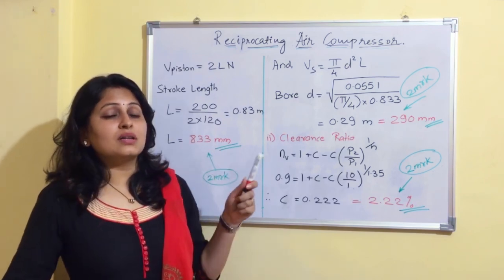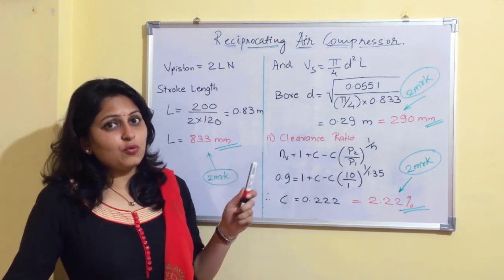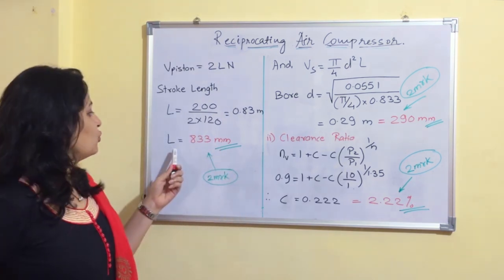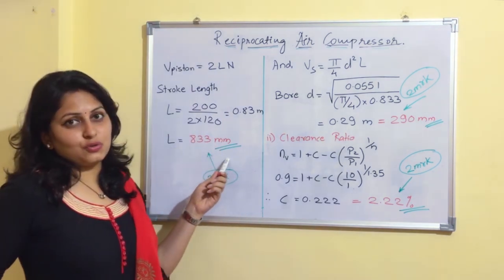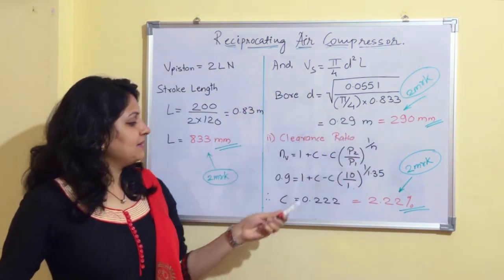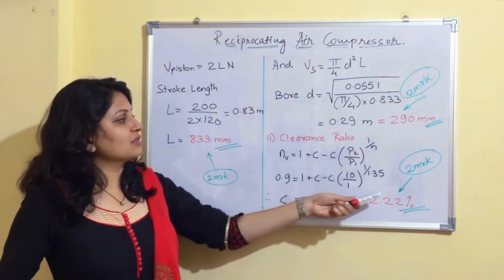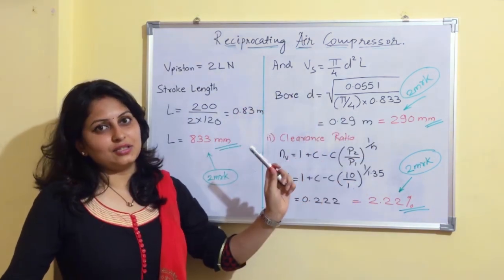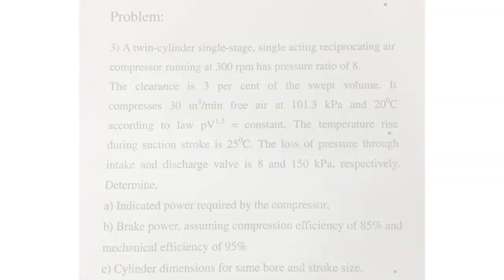The mark distribution for Problem 2 is: 2 marks for indicated work, 2 marks for swept volume, 2 marks for stroke length, 2 marks for diameter, and 2 marks for clearance ratio.